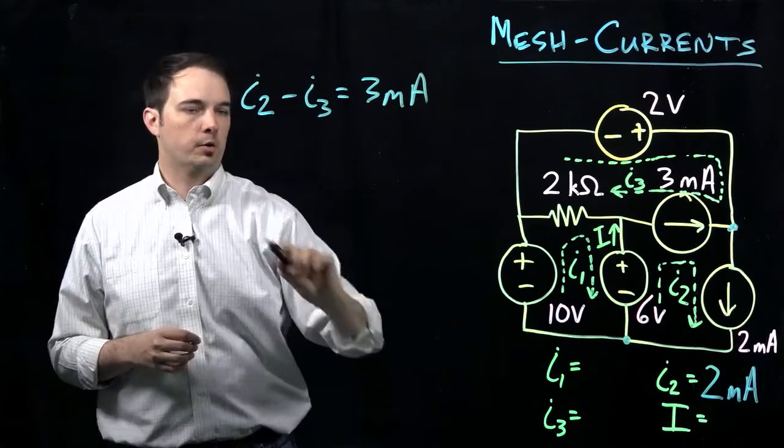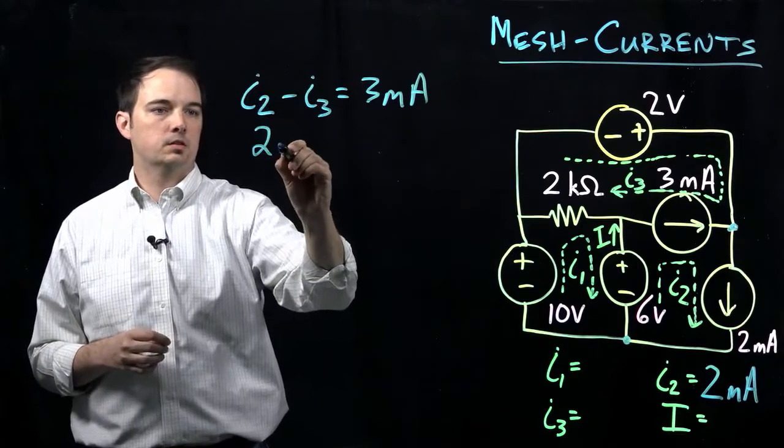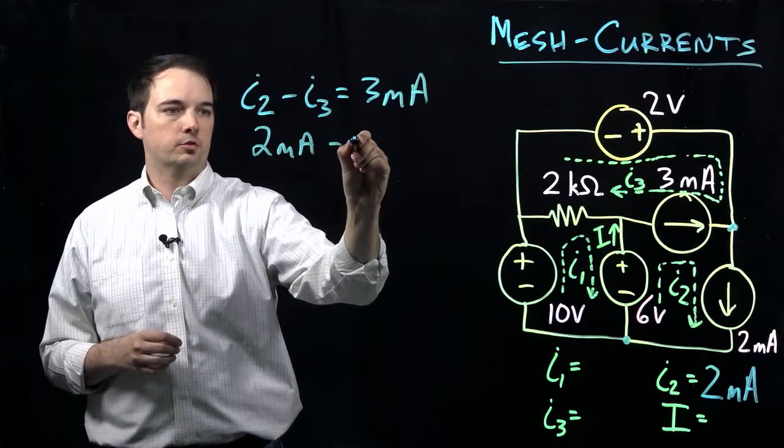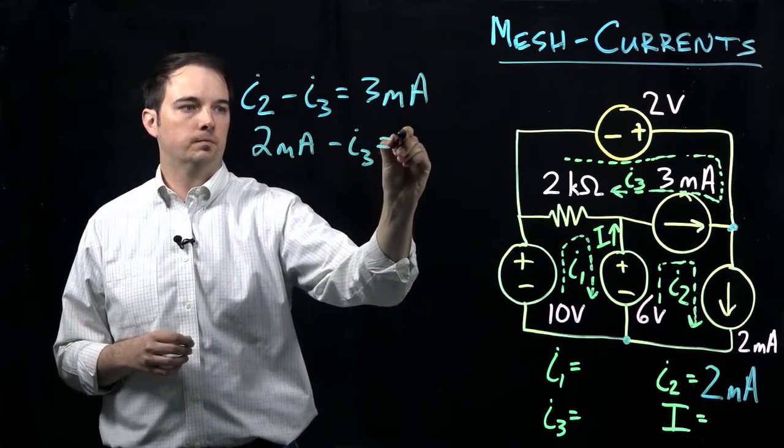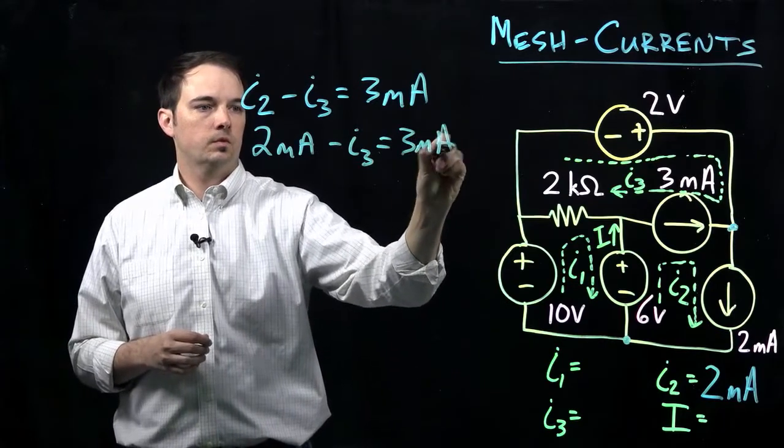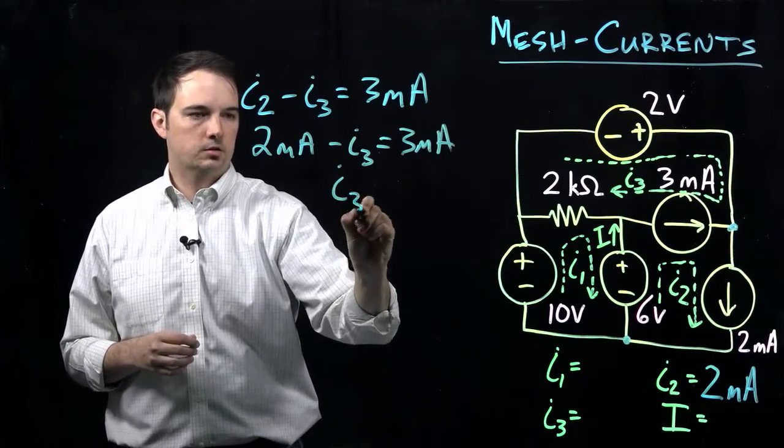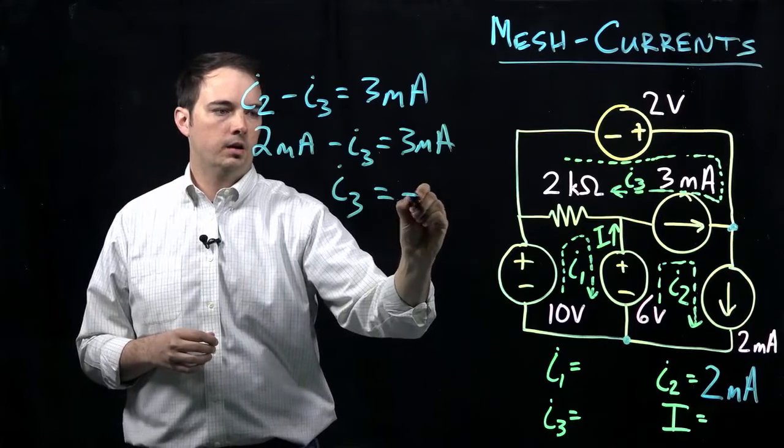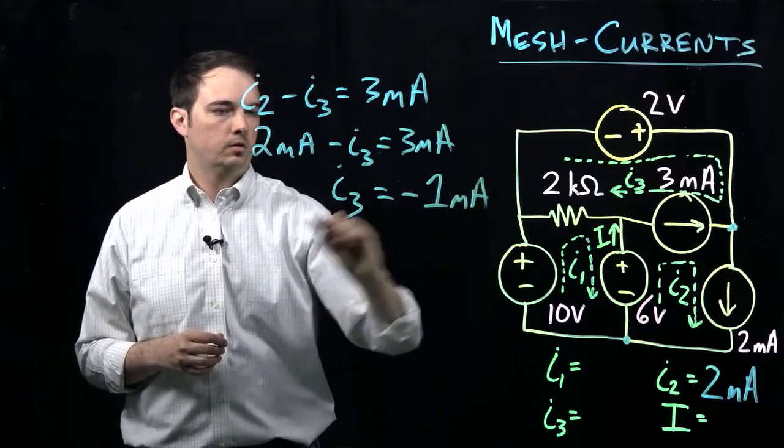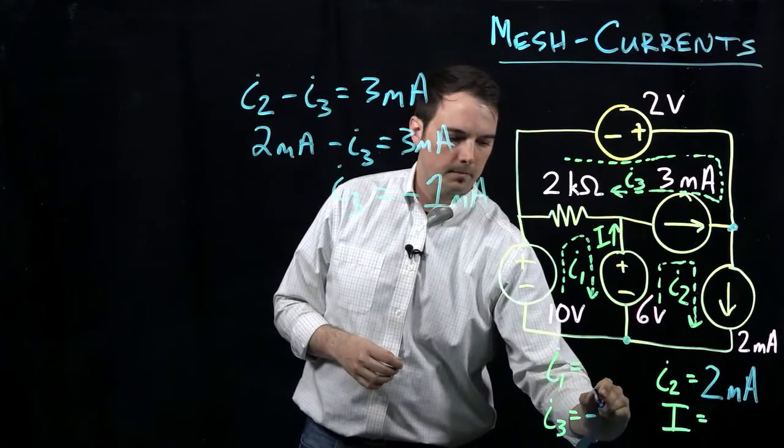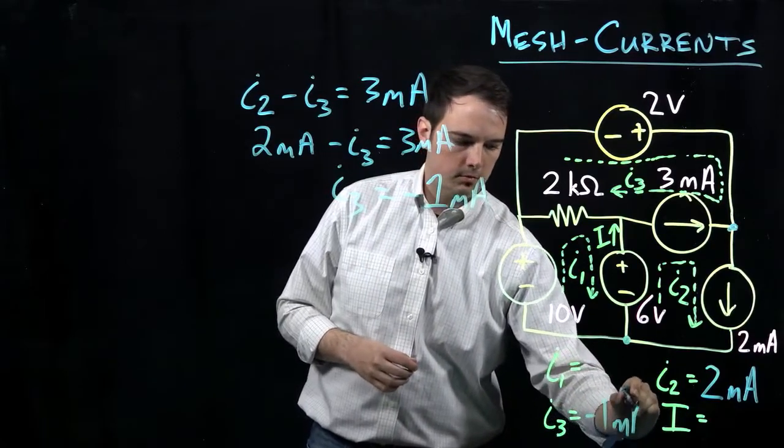Knowing that we already know that I2 is 2 milliamps, you can see we can get to a very simple solution where I3 is simply going to be equal to negative 1 milliamp.